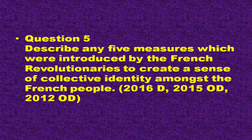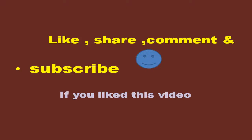Question number five: Describe any five measures which were introduced by the French revolutionaries to create a sense of collective identity among the French people. The first clear-cut expression of nationalism came with the French Revolution in 1789. France was under the rule of an absolute monarch when the revolutionaries came to power.